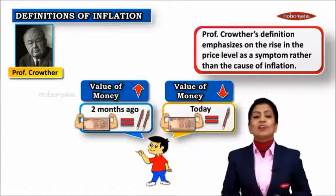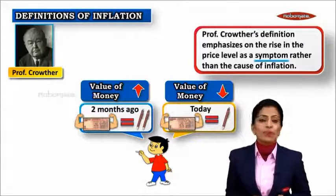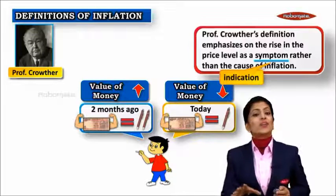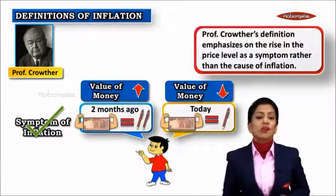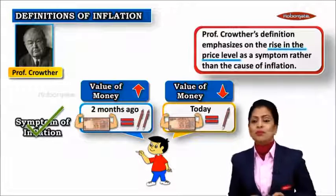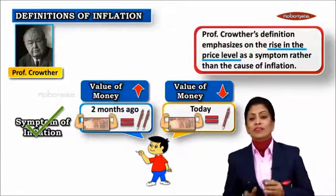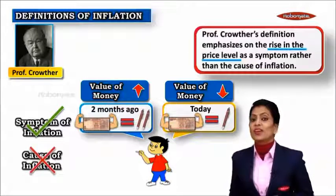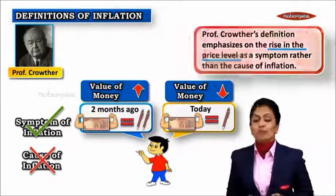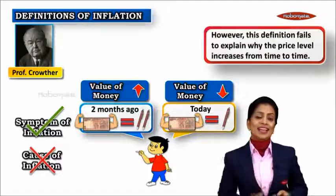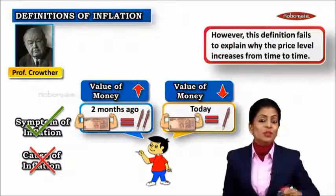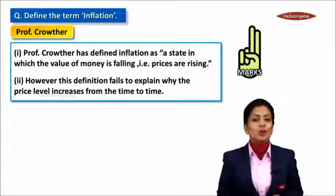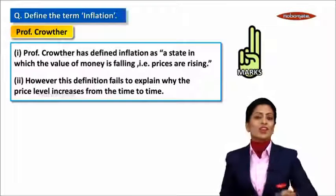He focused only on the symptom of inflation. A symptom means an indication — he showed an indication of price rise, which is that the price level keeps rising during inflation. He did not focus on the causes of inflation, so Professor Crowther's definition fails to explain why the price level increases from time to time. This definition, which comes in your exam for two marks — in the next module we shall find out about the economist who gave the causes of inflation.